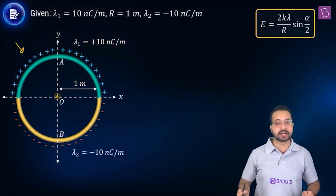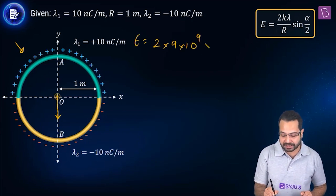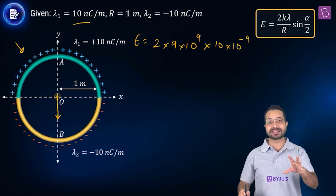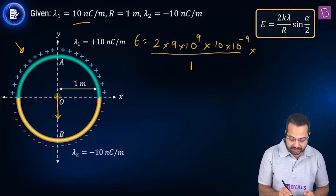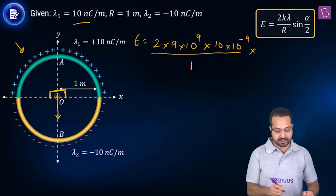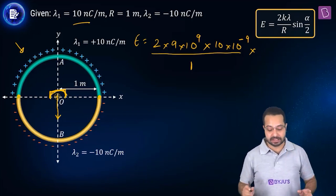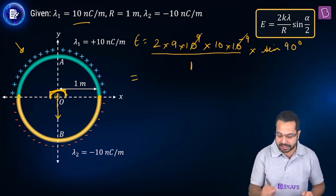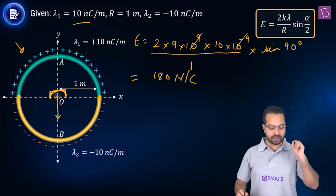Let's calculate the electric field due to the top half of the ring. E = 2 × (9×10⁹) × (10×10⁻⁹) / 1 × sin(α/2). The top half subtends 180°, so α = 180° and sin(90°) = 1. The 10⁹ and 10⁻⁹ cancel, giving E = 180 N/C directed downward.